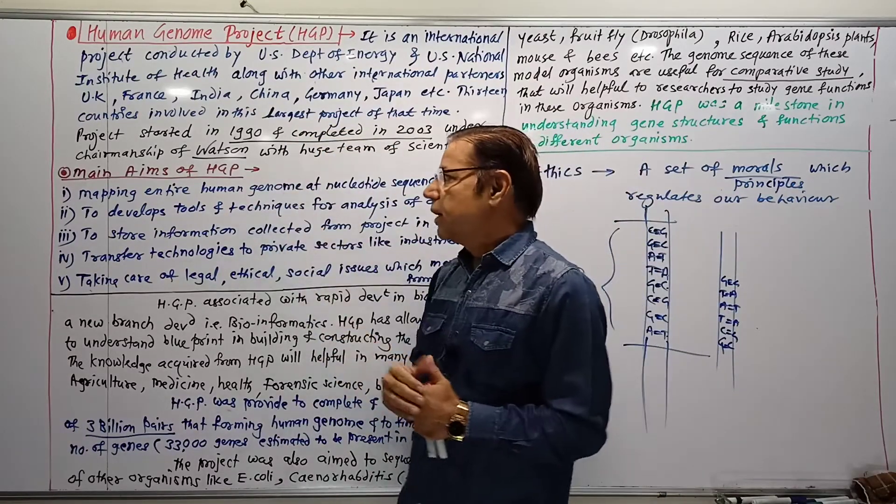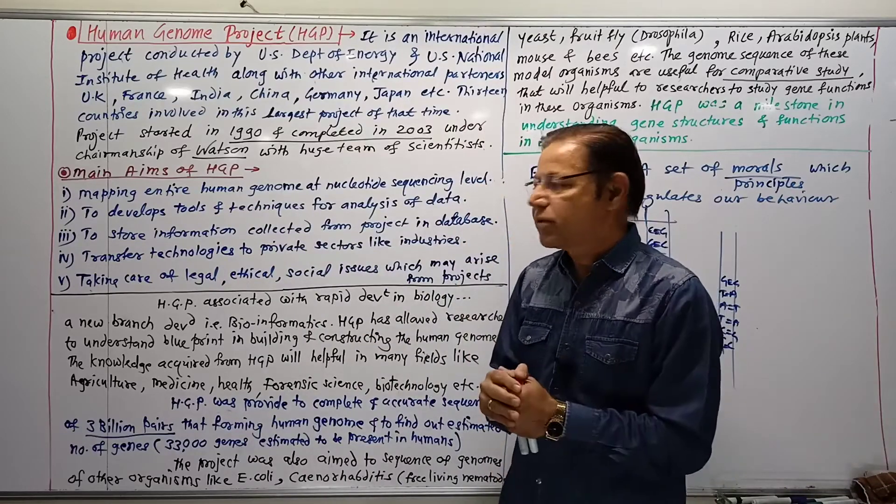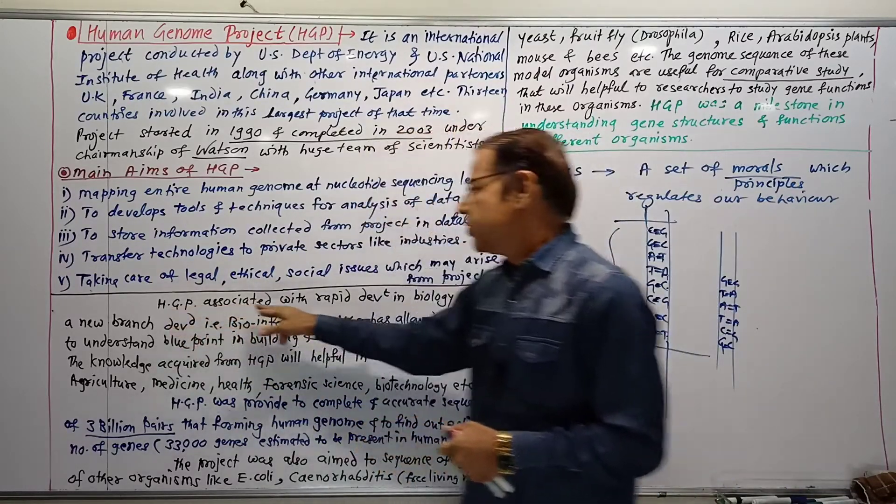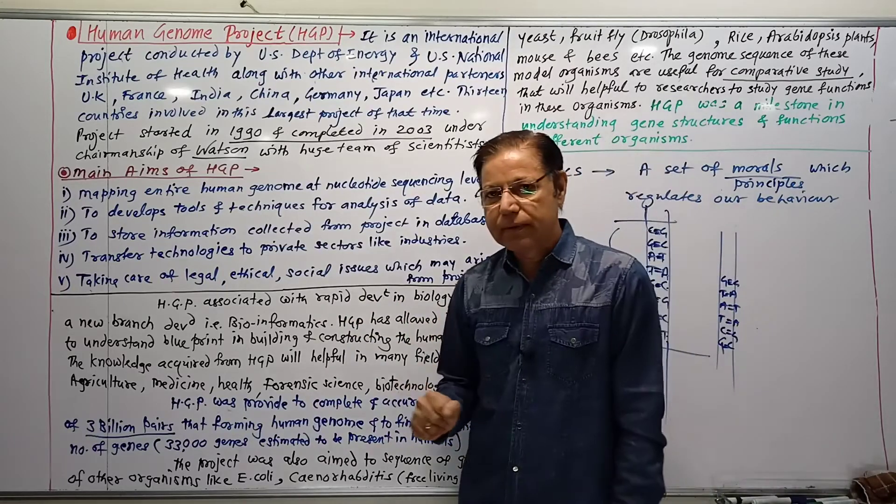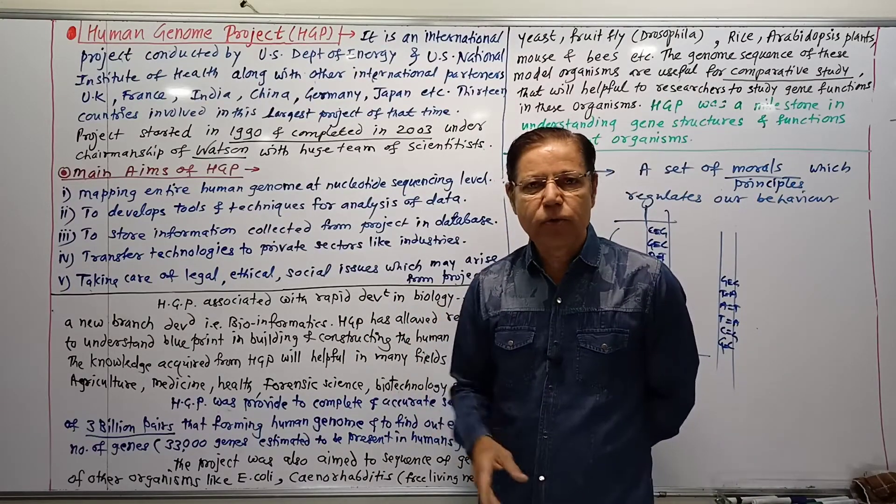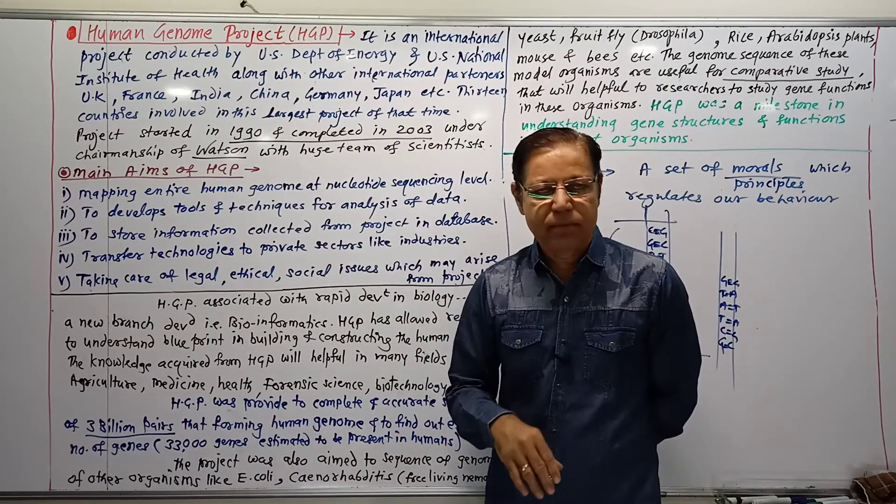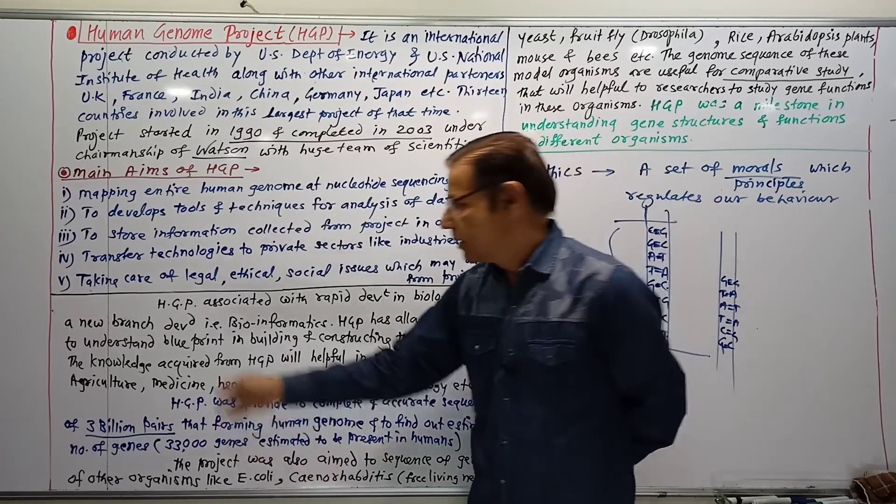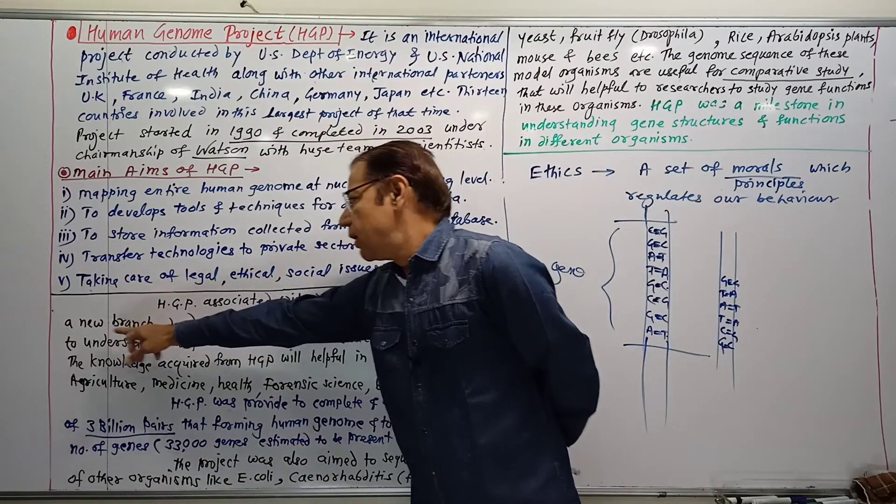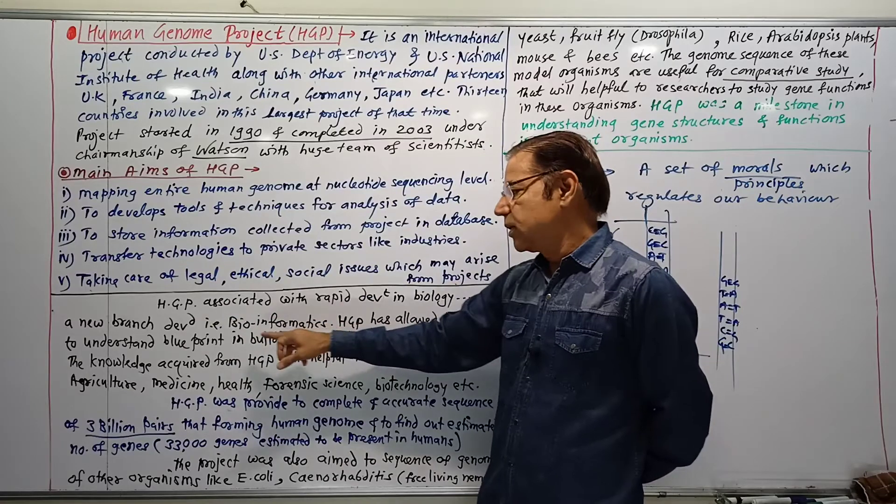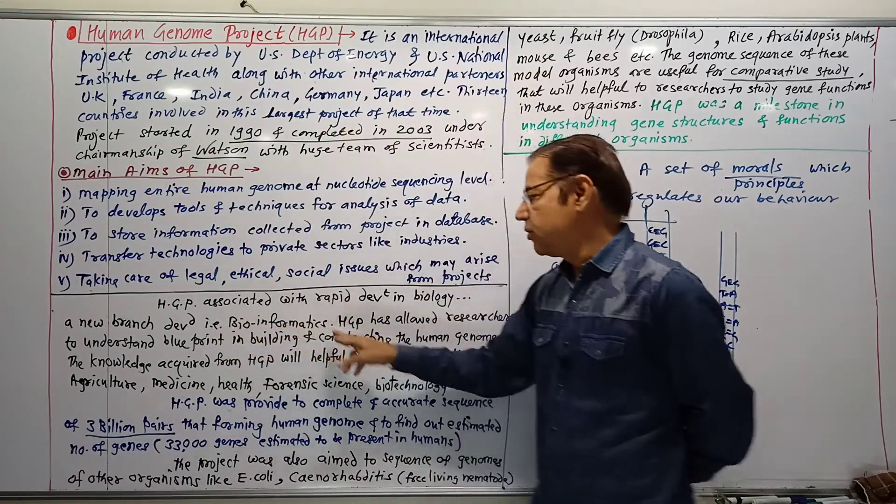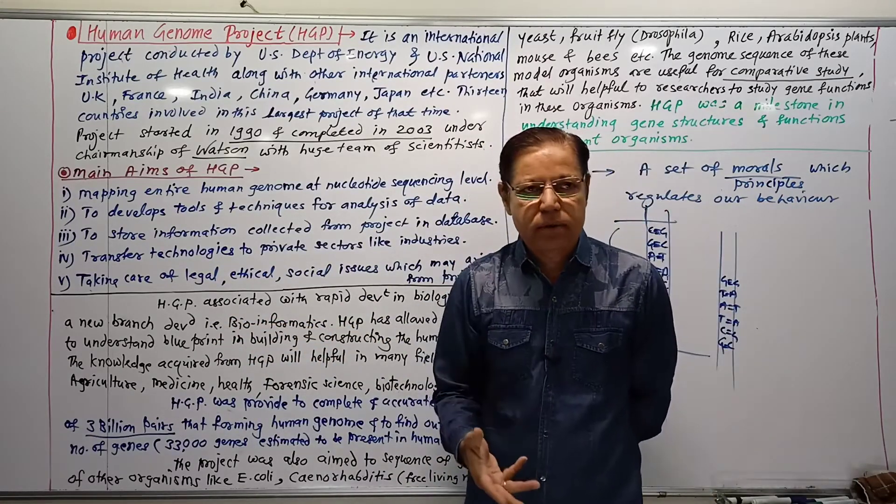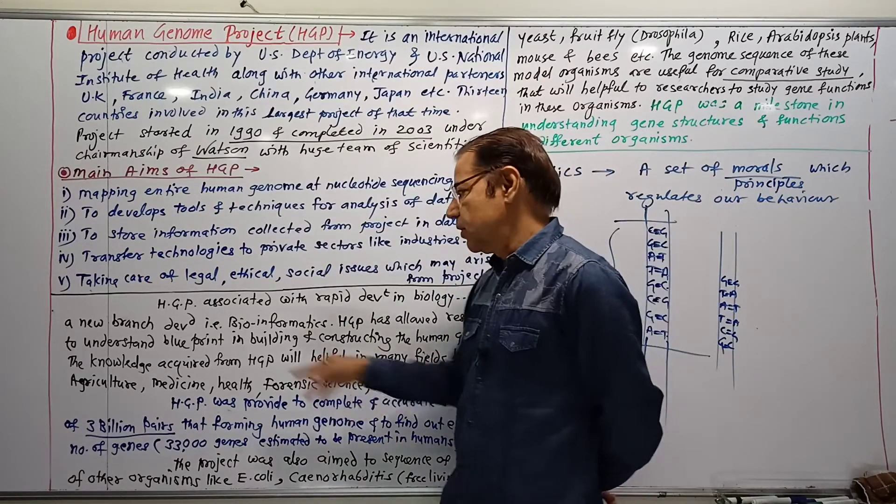The Human Genome Project is associated with rapid development in biology. Every huge project produces new things in the scientific world. A new branch developed because of this project: bioinformatics, which means the use of computers and information technologies in biology.